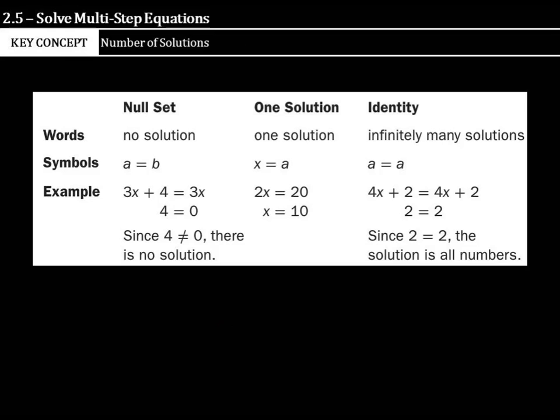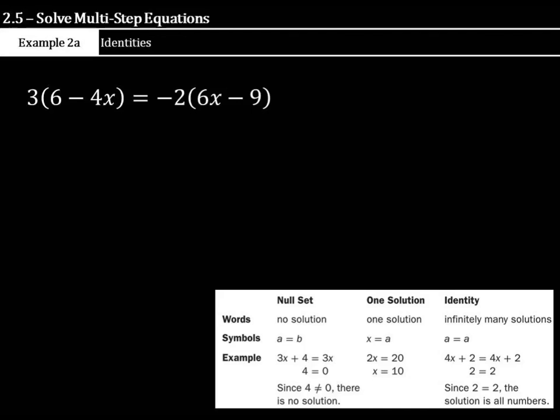Now, most equations we're going to solve like the equations we just solved typically have one solution. But there are times when you might have an equation with no solution. There may be times when you can have an equation that's called an identity where you have every single possible number being a solution. And our next examples take a look at both the null set where you have no solution and the identity when you have infinitely many solutions. And we'll keep this table on the screen. This is an example of an identity where you have infinitely many solutions. So let's go ahead and distribute in order to solve to see how this works out.